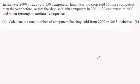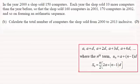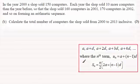So how do we calculate the number of computers sold from 2000 to 2013 inclusive? Well, this relies on this particular formula here — the sum of the first n terms of an arithmetic sequence. The terms are a, a plus d, a plus 2d, and so on. If you're unsure of this, do check out my video tutorials on arithmetic sequences on my website.